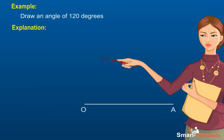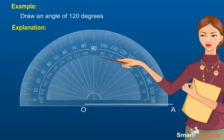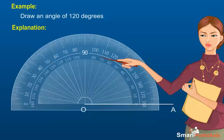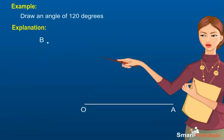Step 2: Keep the protractor along OA such that center point of the protractor is on O. Step 3: See the zero mark that lies on the ray OA. Count 120 degrees from there and mark a point B.